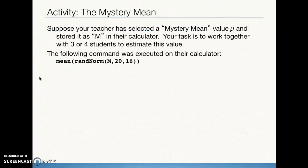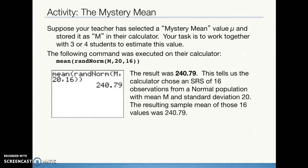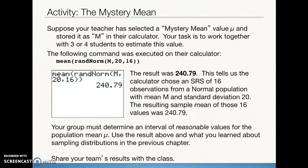Imagine that we come up with a number — we'll call it our mystery number. We put that at the center of a normal distribution, so it's the mean, and the normal distribution has a standard deviation of 20. From that normal distribution, we take a sample of 16 numbers and find the sample mean. The result we got is 240.79, and our job is to determine a range of plausible values for our mystery number.